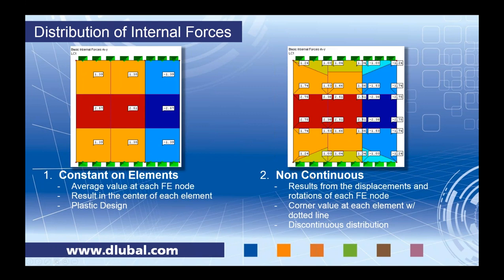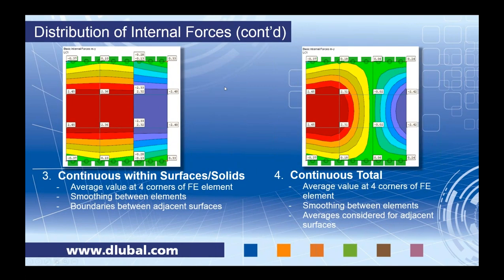'Non-continuous' calculates results from displacements and rotations at every FE node, with corner values at each element and a dotted line pointing to which FE node each belongs to. It's a discontinuous distribution — there may be contours within the same element, but no smoothing between adjacent elements. Realistically this is not efficient and hard to interpret, which is why the other distribution types were developed.